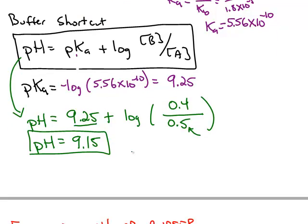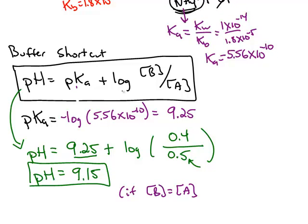Notice in this formula, if you made a buffer where the concentration of the base equals the concentration of the acid, then this term would be the log of 1, and the log of 1 is 0. So under those conditions, the pH of your buffer is just equal to the pKa.